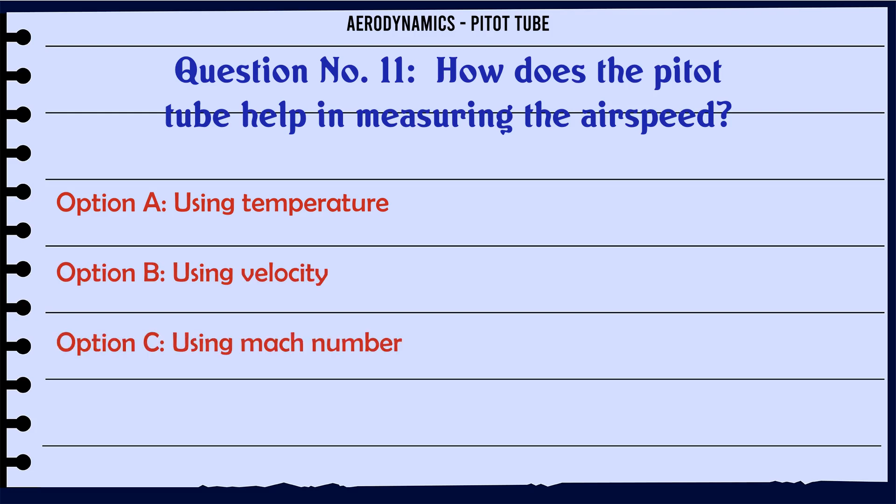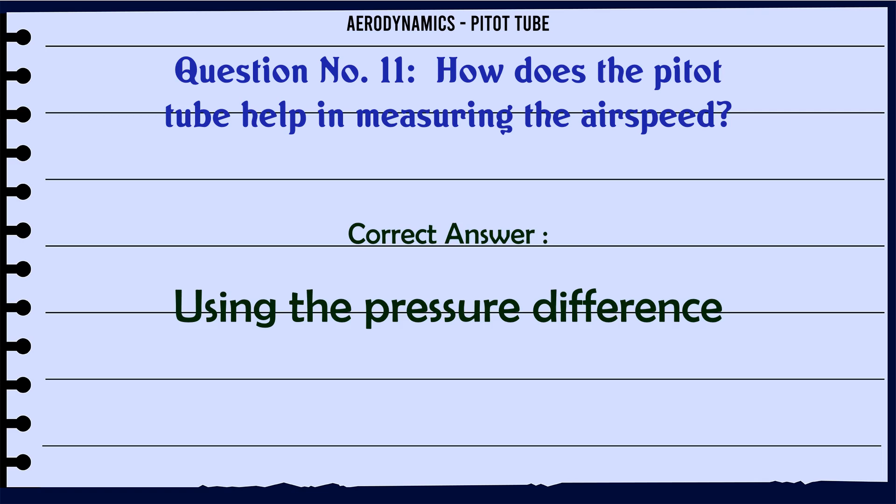How does the pitot tube help in measuring the airspeed? A. Using temperature, B. Using velocity, C. Using Mach number, D. Using the pressure difference. The correct answer is Using the pressure difference.